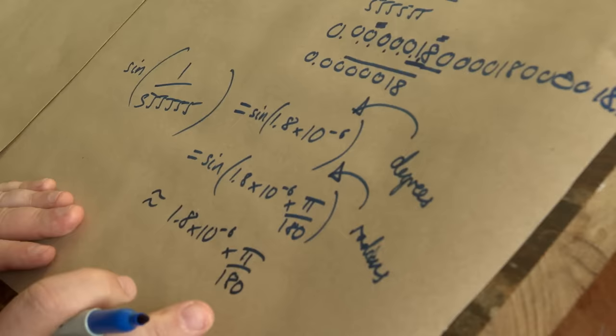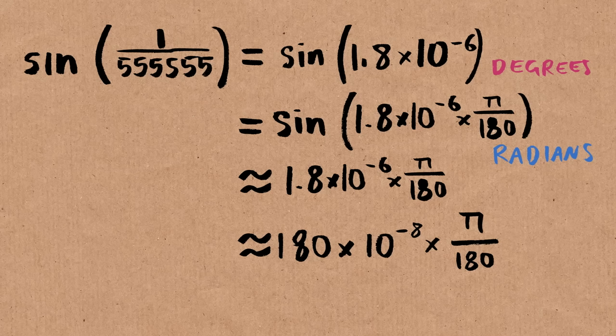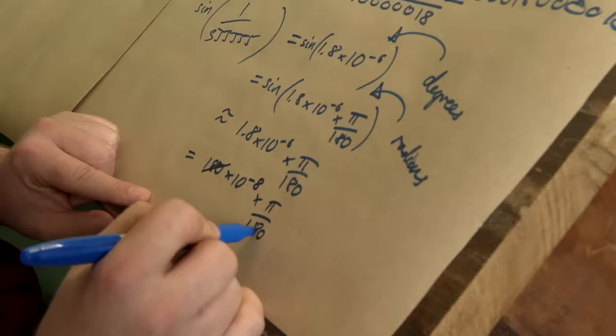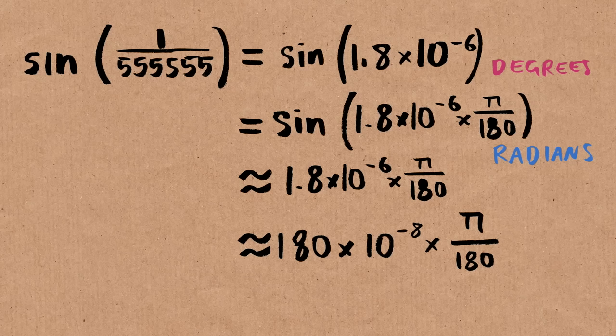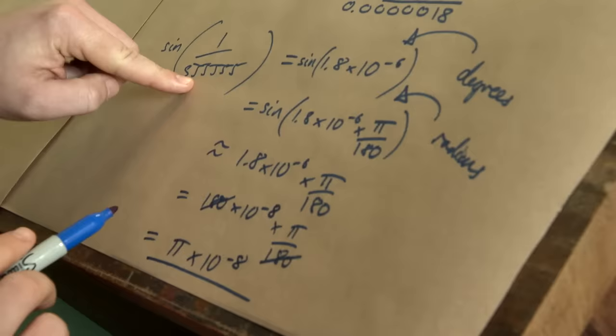So that was in degrees, and this is now in radians — I've done the conversion. Which means I can now use the chapter 2 business to say this is approximately equal, because sine x and x are approximately equal. Because this is small — there's no question — it's approximately equal just to 1.8 times 10 to the negative 6 times pi over 180. There's a pi in there — we can see where it's coming from — and there's some 1s and 8s possibly cancelling. So 1.8 times 100 equals 180, and 180 divided by 180 cancels out, leaving pi times 10 to the negative 8. That's where the surprising pi comes from.